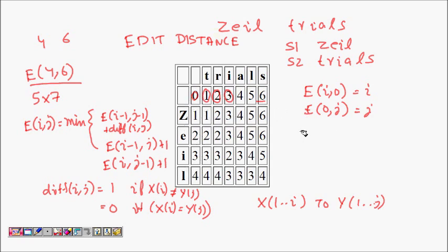Similarly, the first column represents e(i, 0) — converting prefixes of 'zeal' into a zero-length string. To convert 'z' requires 1 deletion, 'zi' requires 2 deletions, 'zil' requires 3 deletions, and 'zeal' requires 4 deletions.